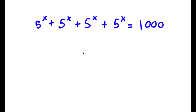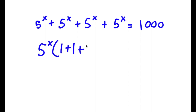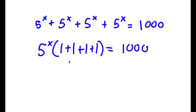So in this problem, I have 5 to the power of x plus 5 to the power of x plus 5 to the power of x plus 5 to the power of x is equal to 1,000. To solve this, I'm going to first start by factoring out 5 to the power of x. So now I have 5 to the power of x times 1 plus 1 plus 1 plus 1 is equal to 1,000. Now 1 plus 1 plus 1 plus 1 is 4, so I have 5 to the power of x times 4 is equal to 1,000.